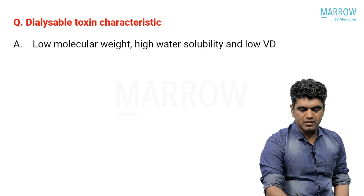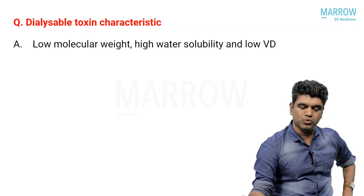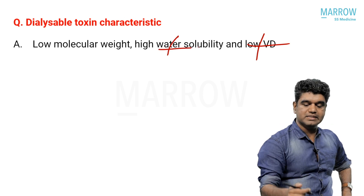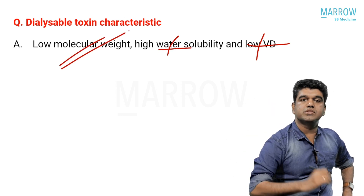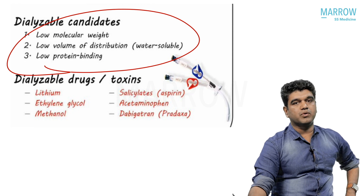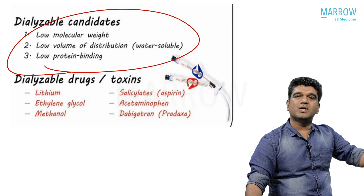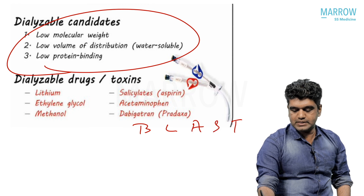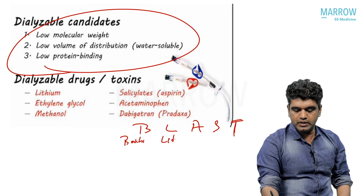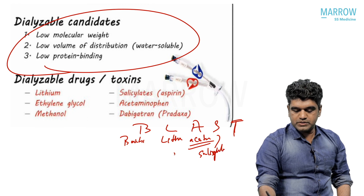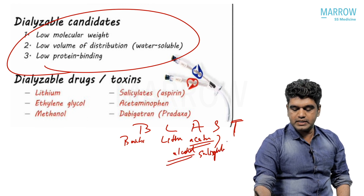Dialyzable toxin characteristics: the toxin should be in the blood with low volume of distribution, should not be liposoluble — it should be water soluble. It should be diffusible, so it should have low molecular weight. The most important characteristics of a dialyzable toxin are: low molecular weight, low volume of distribution, and low protein binding. Remember the mnemonic BLAST: B = barbiturates, L = lithium, A = acetaminophen, S = salicylates, T = theophylline.